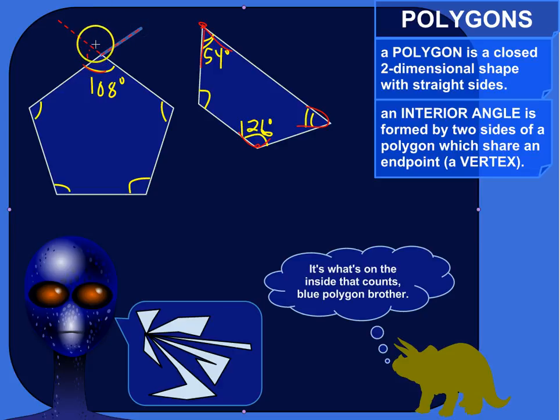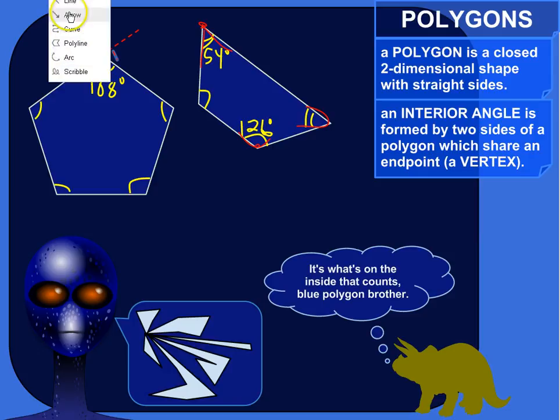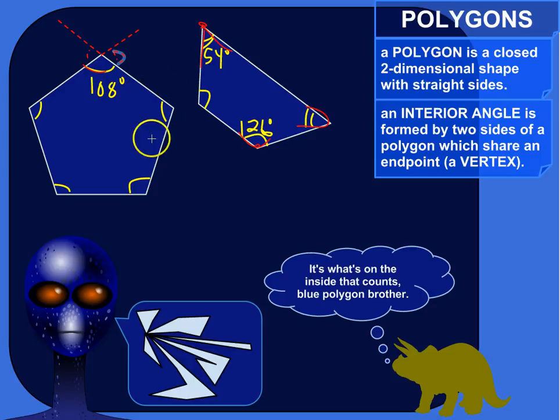If you extend that side, that forms an exterior angle, that forms an angle there. So those are exterior or outside, but the interior angles are the ones that are inside that are formed by the two sides coming together at a vertex.